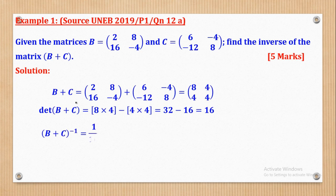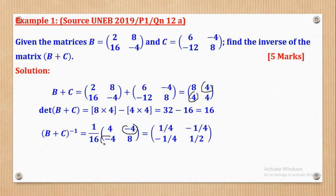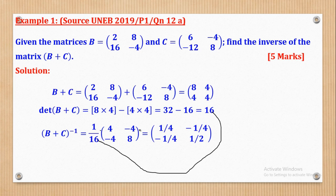Next, we get the adjoint. By interchanging the entries in the major diagonal: where there was 8 we put 4, and where there was 4 we put 8. For the minor diagonal, both entries were positive, so we change their signs — they both become negative. That is the adjoint. Now we multiply by 1 over the determinant, which is 1 over 16, multiplied by the adjoint to give the inverse.